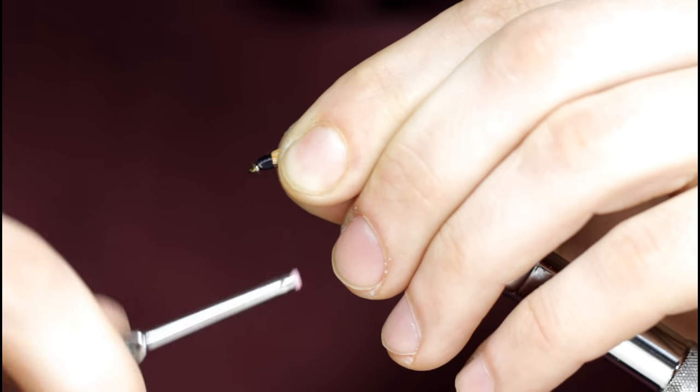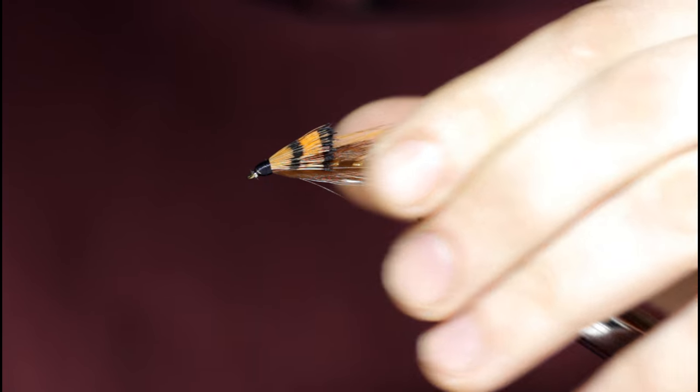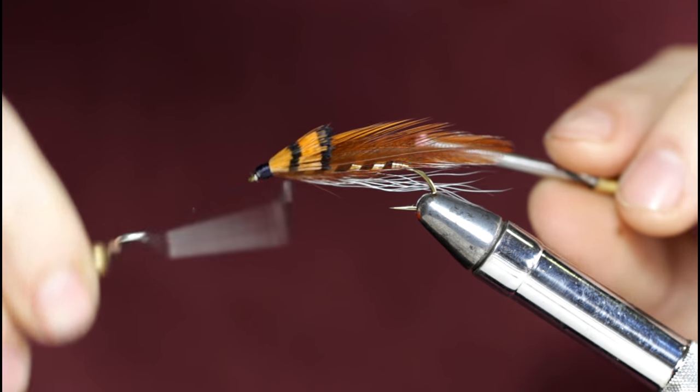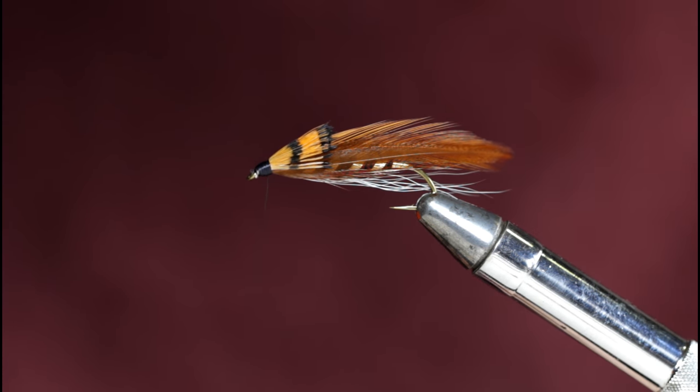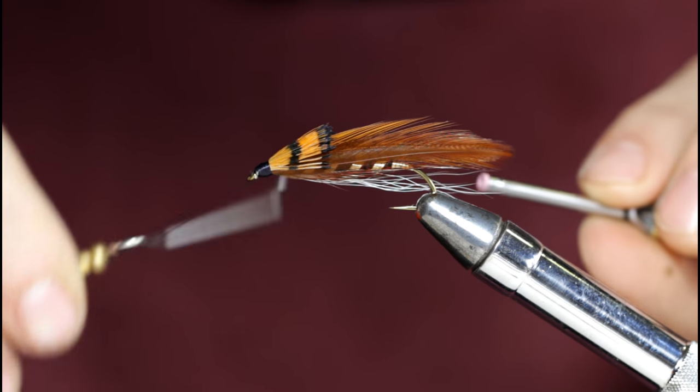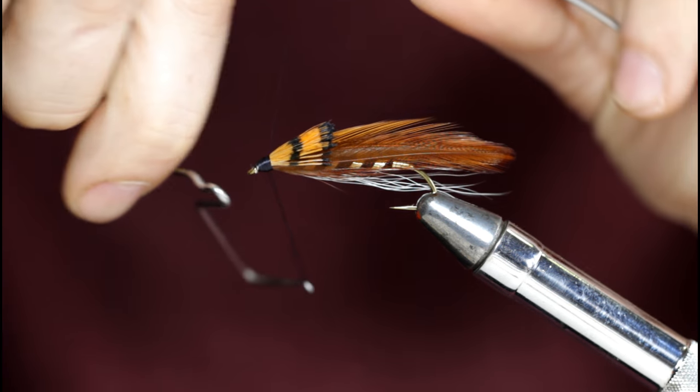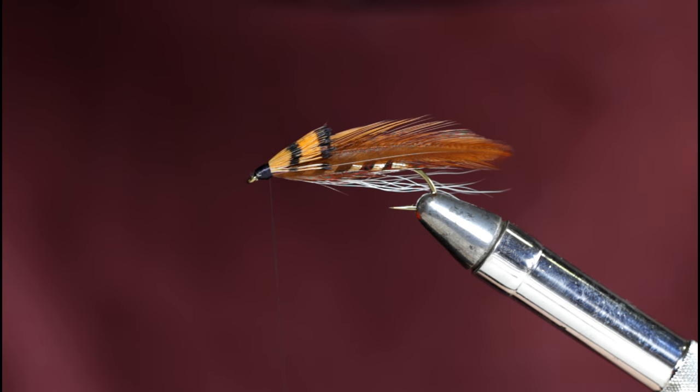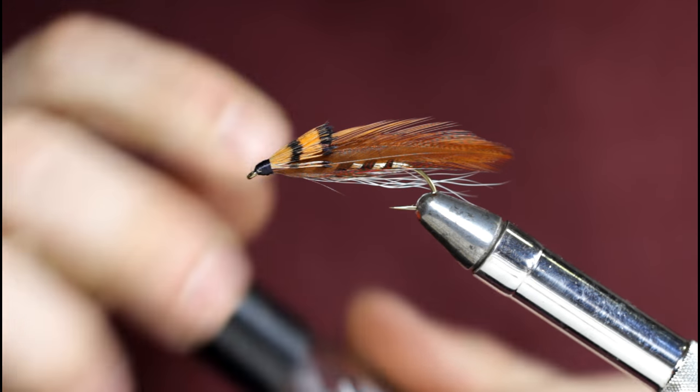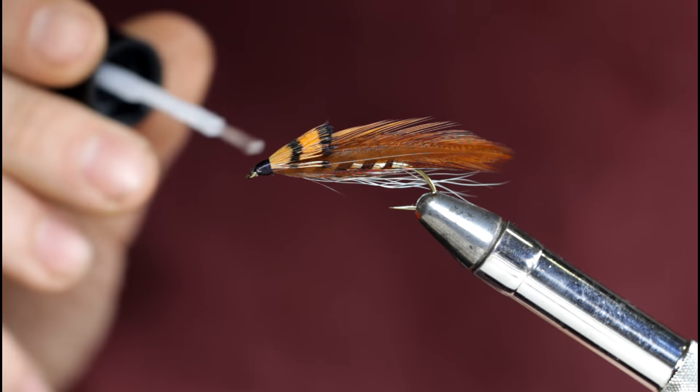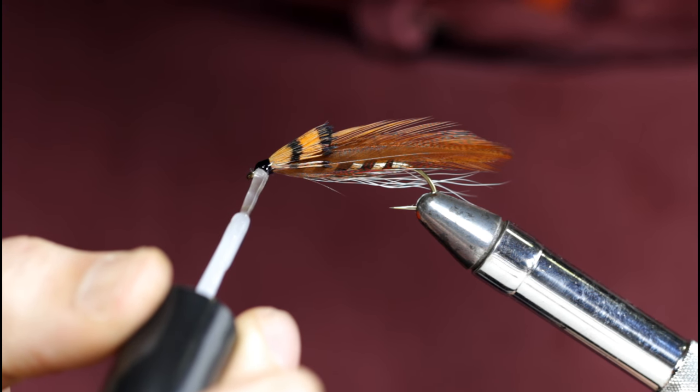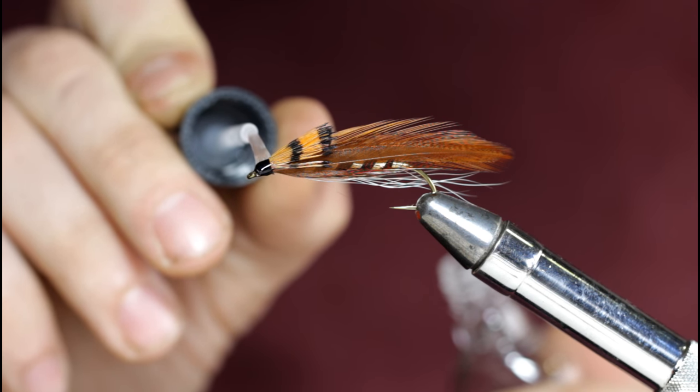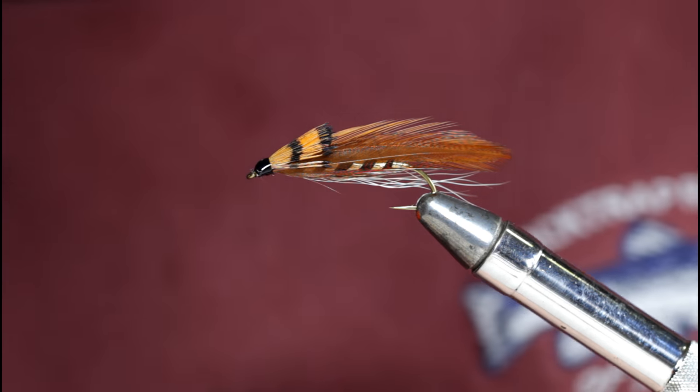I'll grab my whip finish tool, throw a couple whip finishes in. There's one, and another. Always try to make your whip finishes towards the rear of the head so you don't build up an uneven bulk in the front. Just come in and snip off that thread and add your head cement of choice. Here I'm using Sally Hansen's.